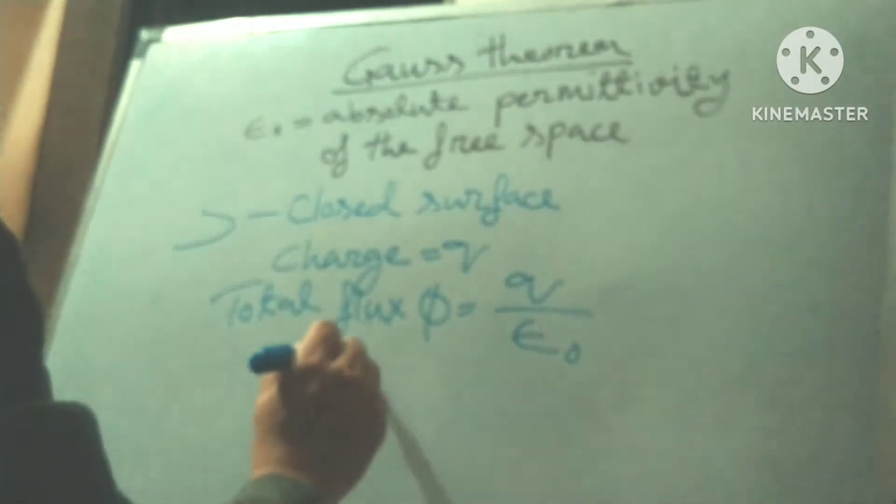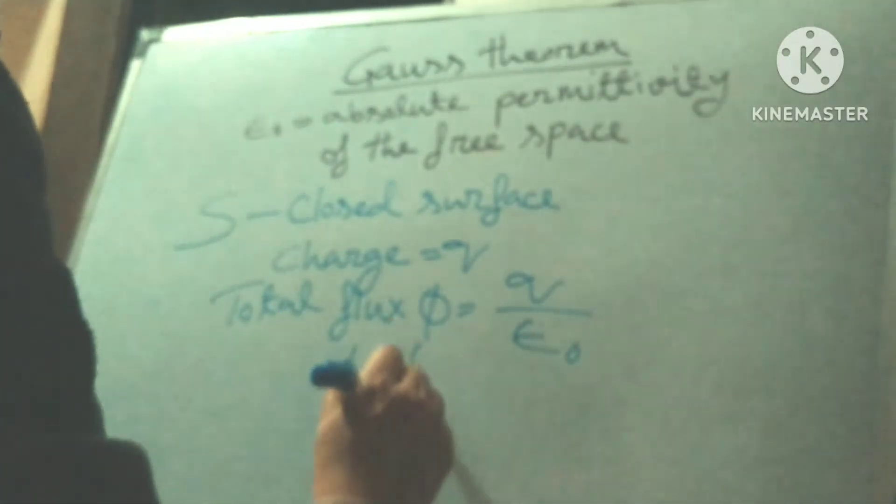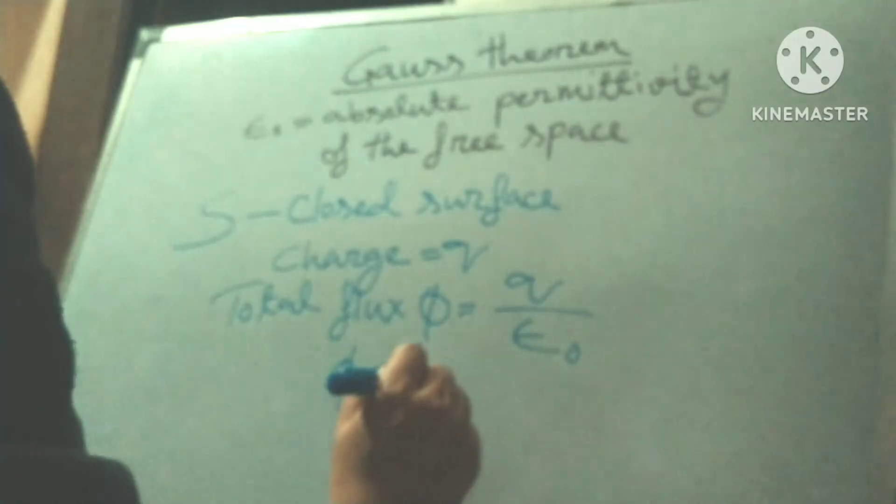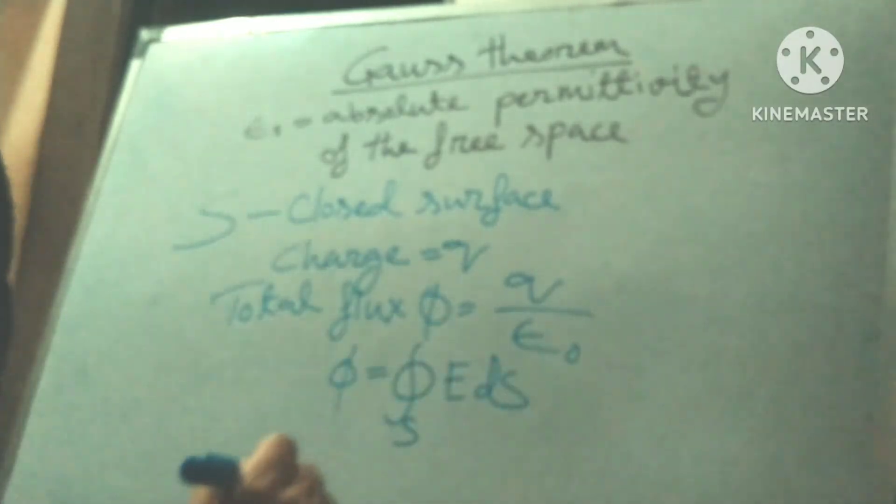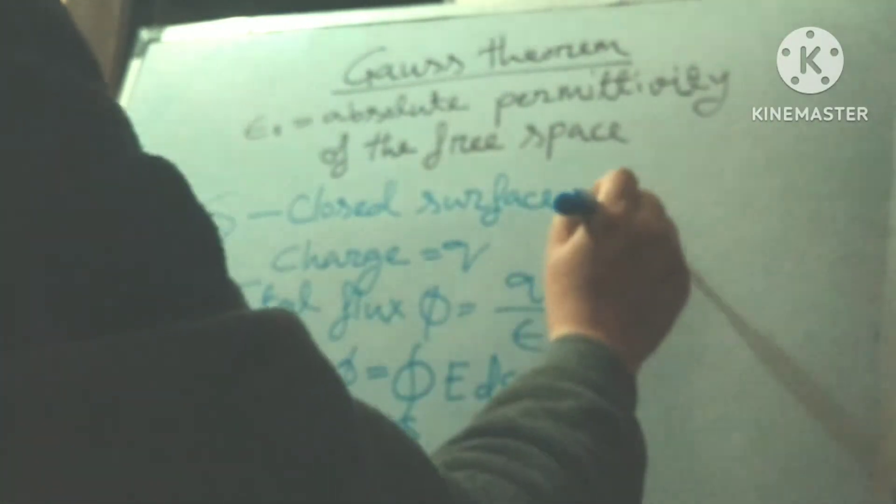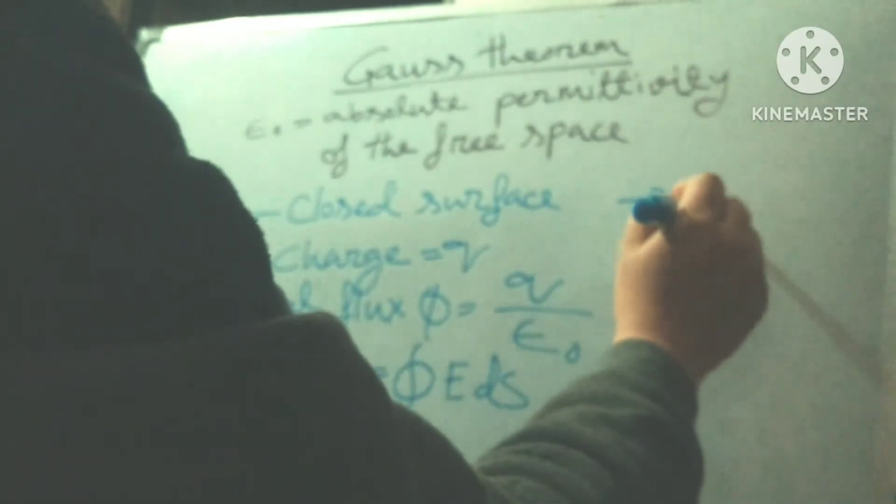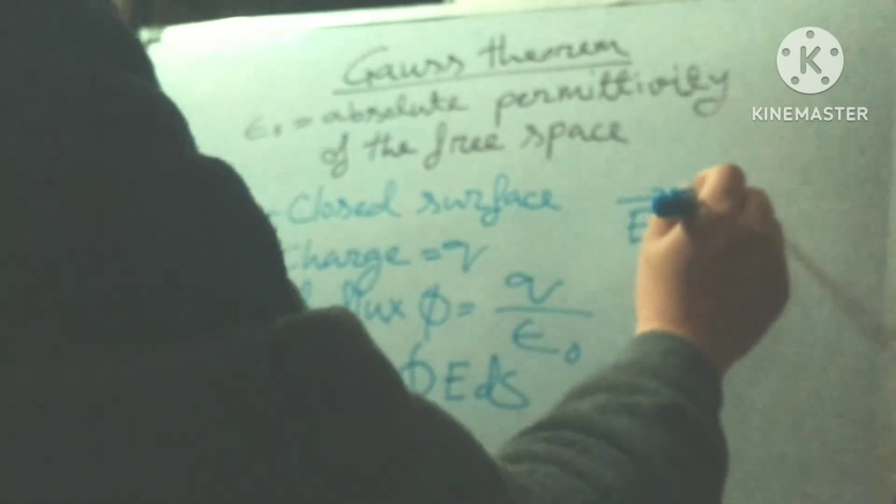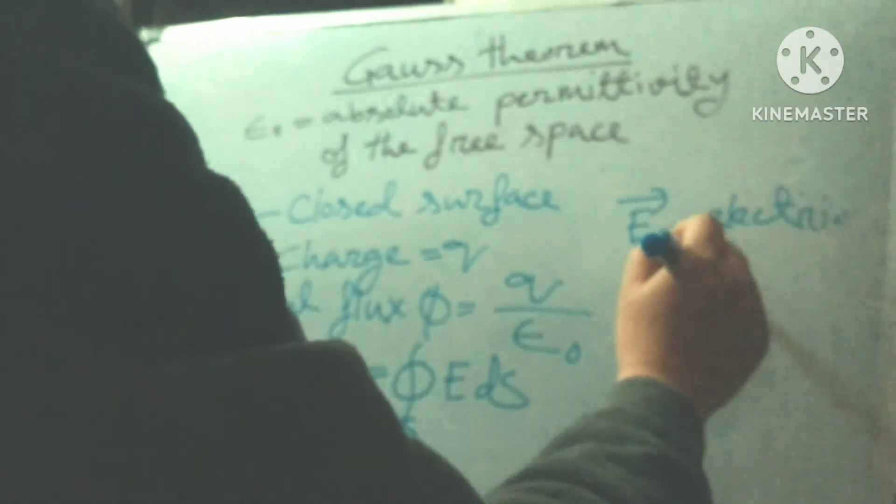Electric flux can be defined as phi equals to closed integral E dot dS, where E is electric field.